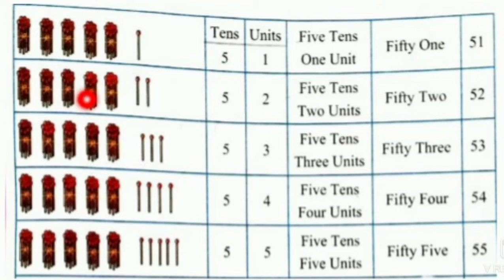And here we have 5 tens and 1 unit. So, 5 tens and 1 unit is 51. 5 tens and no units is 50. 5 tens and 4 units is 54. 5 tens and 5 units is 55.